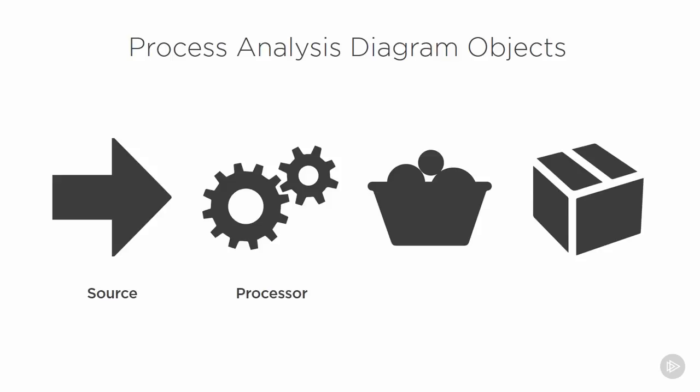We also have Processors, and these are machines or work cells where the parts are processed and can include activities such as cutting, machining, welding, or assembling parts together. We also have Buffers, and these are basically areas where we can store and keep our parts in between the different processes. And then we have Products, and these are the finished goods which are required to run a simulation, and basically serve as an endpoint to all of our processes.